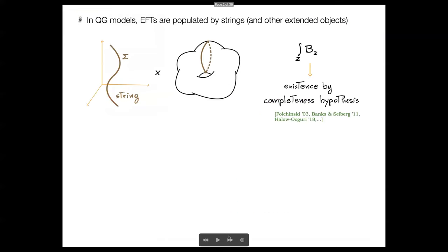Let me start with some motivation. One motivation comes from the observation that effective field theories admitting a UV completion compatible with quantum gravity are typically populated by several extended objects, and in particular, we focus on strings. Such extended objects, and so also strings, appear in effective field theories coming from string compactifications because they correspond to some higher-dimensional brane wrapping some internal cycle.